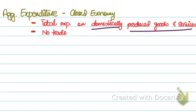First, we'll talk about aggregate expenditure in a closed economy. A closed economy is one that does not trade with other countries, which means imports and exports are always zero. The basic idea is that production generates income — so production, that is national product (NP), equals national income. And households use that income to expend on goods and services, which means income generates expenditure, and expenditure is AE. Therefore, national product equals national income equals aggregate expenditure, AE.